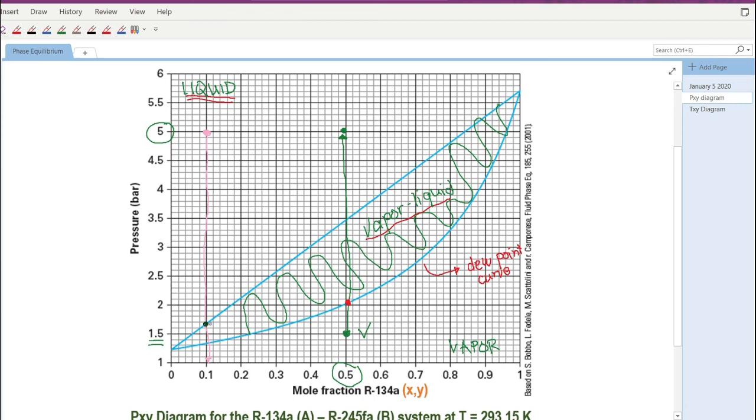Of course, the first bubble containing vapor will be the first bubble of vapor formed. So, of course, that bubble of vapor contains components A and B. So, we call that curve as the, or we call this blue curve here as the bubble point curve. Bubble point curve.